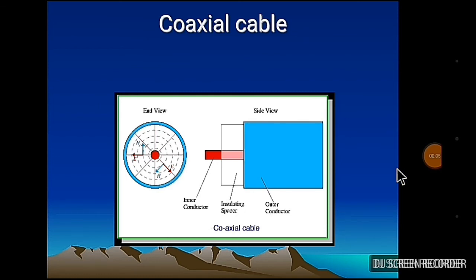Now we will see what happens in coaxial cable. This is one side view and this is cross-section view. This is outer conductor and this is inner conductor. Here also creates electromagnetic field, but whatever signal is there, it is within the cable.